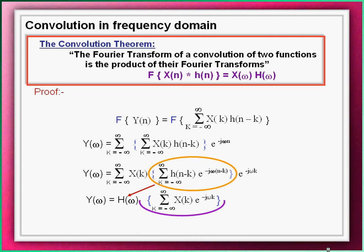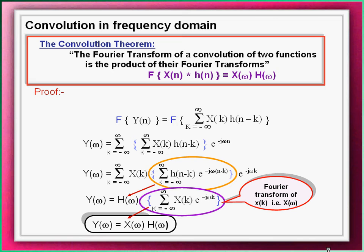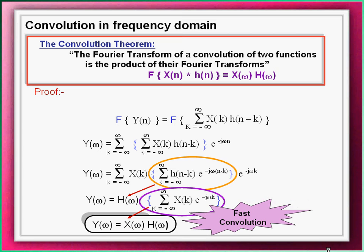Similarly, the remaining term is the Fourier transform of the input signal xn, resulting into a relation that is the product of the frequency domain signals. Convolution theorem can be redefined in the simplest way as convolution in time domain is multiplication in frequency domain. This relation is also called as fast convolution.